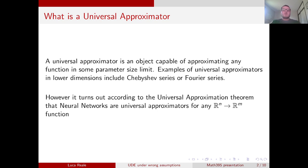However, it turns out, according to the Universal Approximation Theorem, that neural networks are universal approximators for any Rn to Rm function.